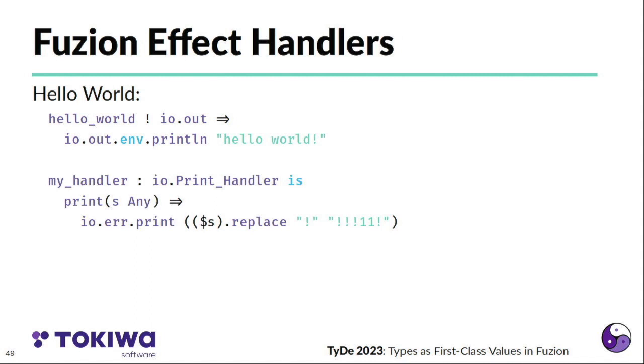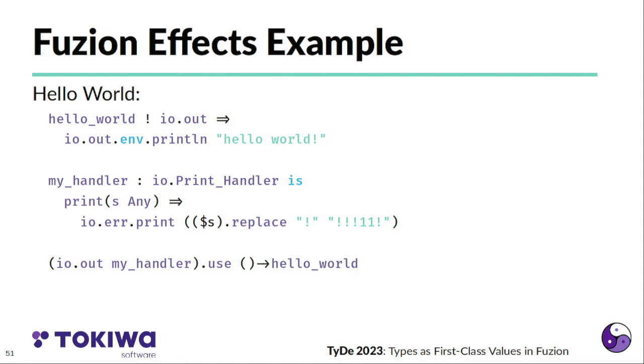So we could define our own handler. Don't look at the details here. But what is important is in our own handler, we use io.error to print something and we mangle around with the string a bit. And now we can create a new instance of the io.out effect. So we call in this case the io.out effect providing our implementation of the handler.